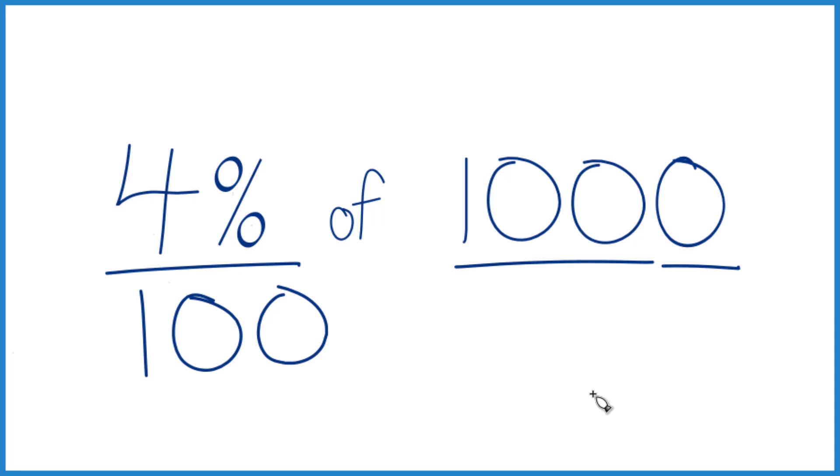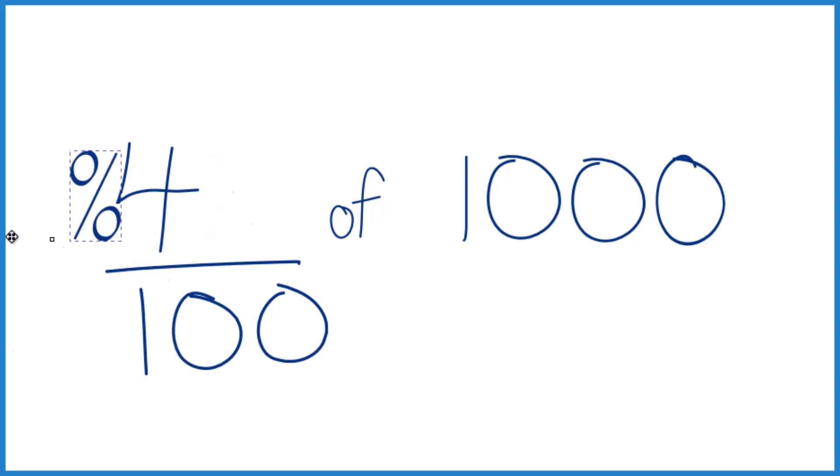So that's one way to do it. Here's another way. We said 4% is 4 over 100. So we can get rid of this.